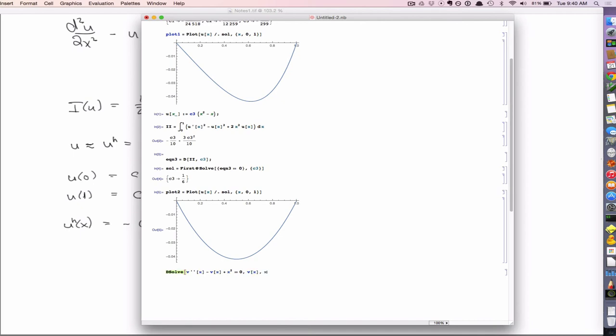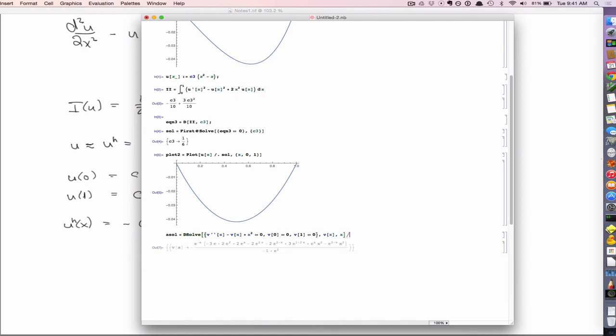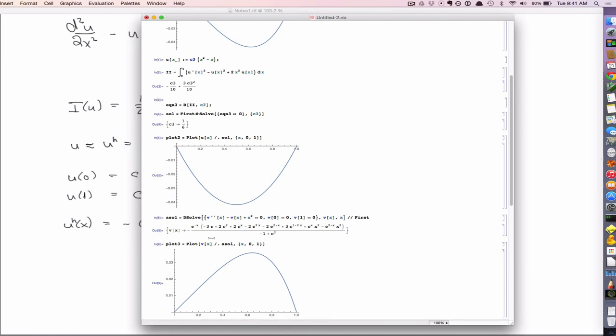So I'm using V here, but if I put the boundary conditions in, V at 0 equals 0, V at 1 equals 0. All right, so that's the actual analytic solution. And then I should be able to plot that. Off by a minus sign somewhere.